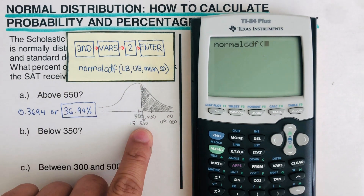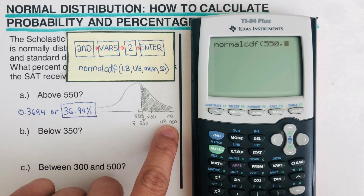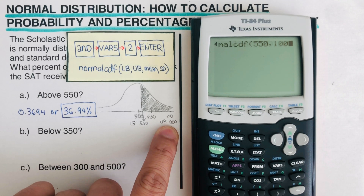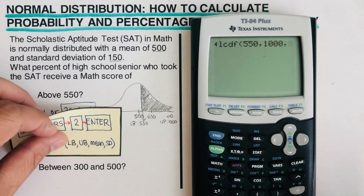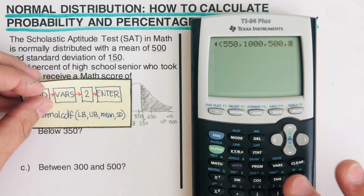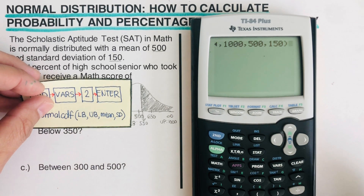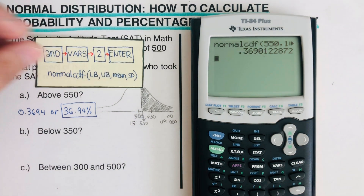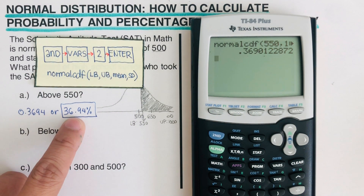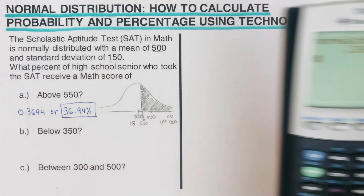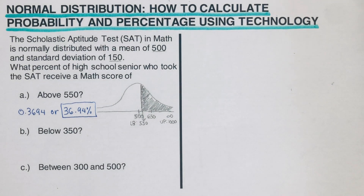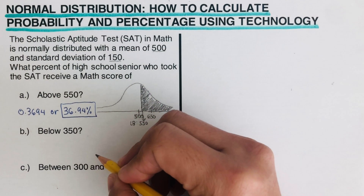Type in the lower bound of 550, comma, the upper bound of 1000, comma, the mean of 500, comma, and the standard deviation of 150, then close the parentheses. This gives us 0.3690, which is very close to the applet's result — the small difference is due to rounding. Now let's move on to the next example, where we're looking for the area below 350.